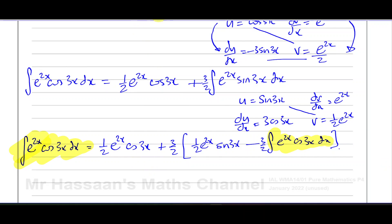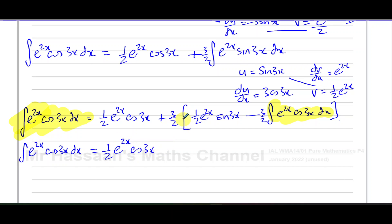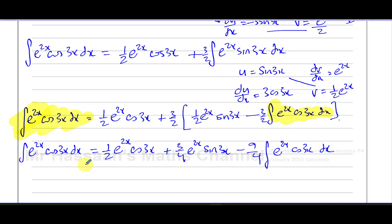You'll notice that the original integral and this repeated integral are like terms — we can combine them. First, expand and simplify the bracket: we get (1/2)e^(2x)·cos(3x) plus (3/4)e^(2x)·sin(3x) minus (9/4) times the integral of e^(2x)·cos(3x) dx. Now I can add the (9/4) integral to both sides.